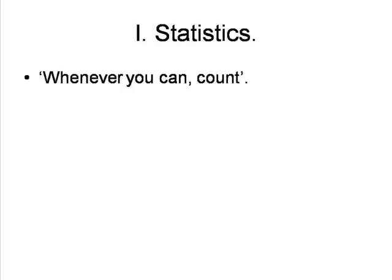First, statistics. A key element in Galton's thought was the importance of measurement, and as such he became one of the major figures in the development of modern statistics. He followed the principle that whenever you can, count. There are many trivial examples of what we might call an obsession with counting. Thus, during his exploration of South-West Africa in the 1850s, he measured the figures of native women from a respectful distance. Later, back in Britain, he counted the number of pretty, average, and ugly girls he passed on the street, finding the incidence of pretty girls highest in London and lowest in Aberdeen.